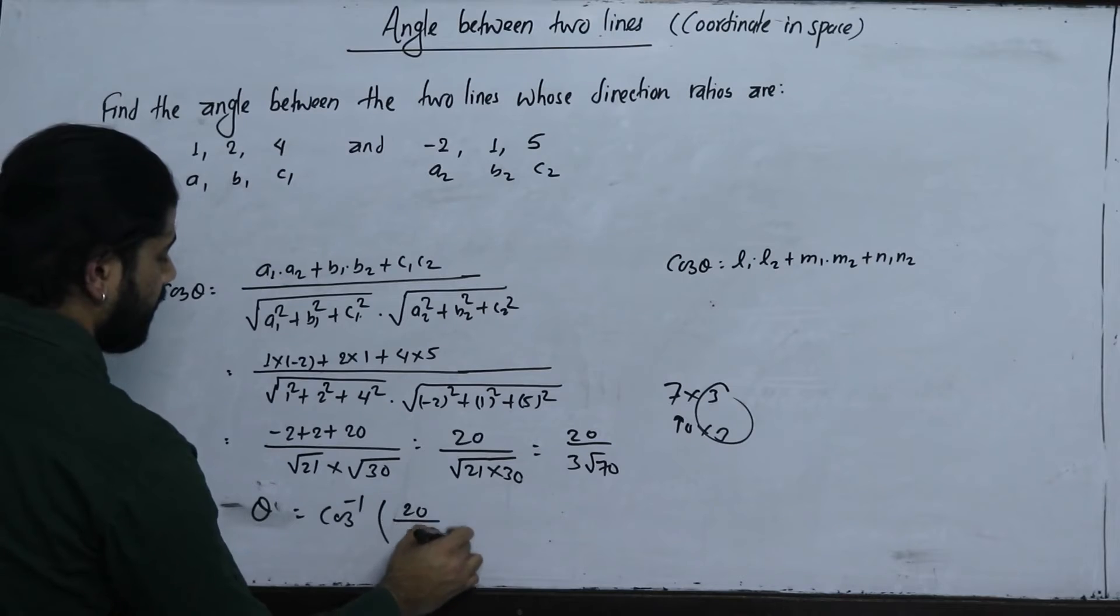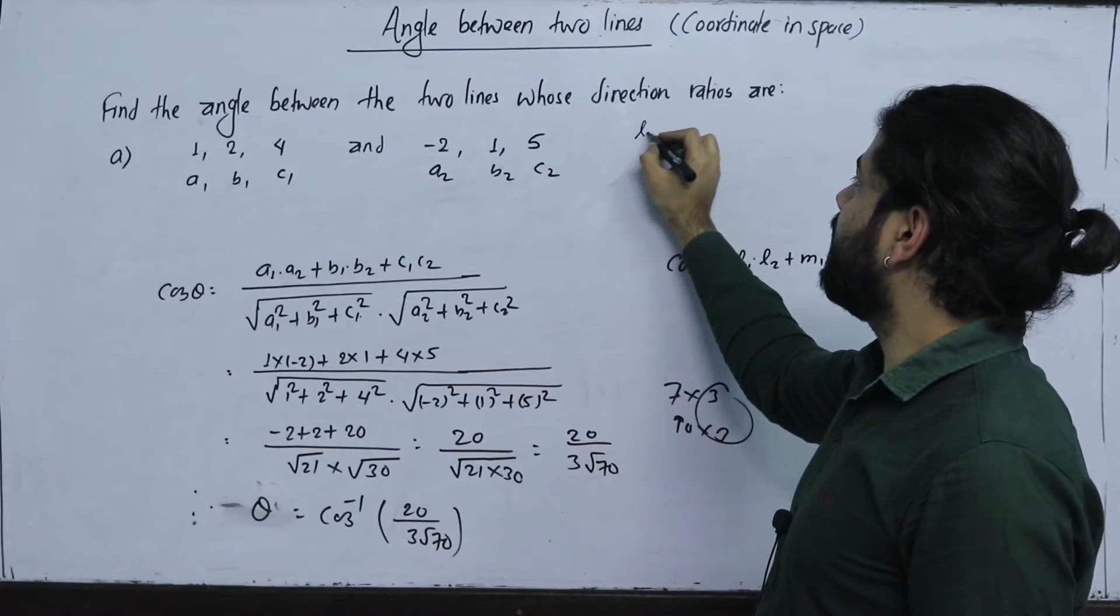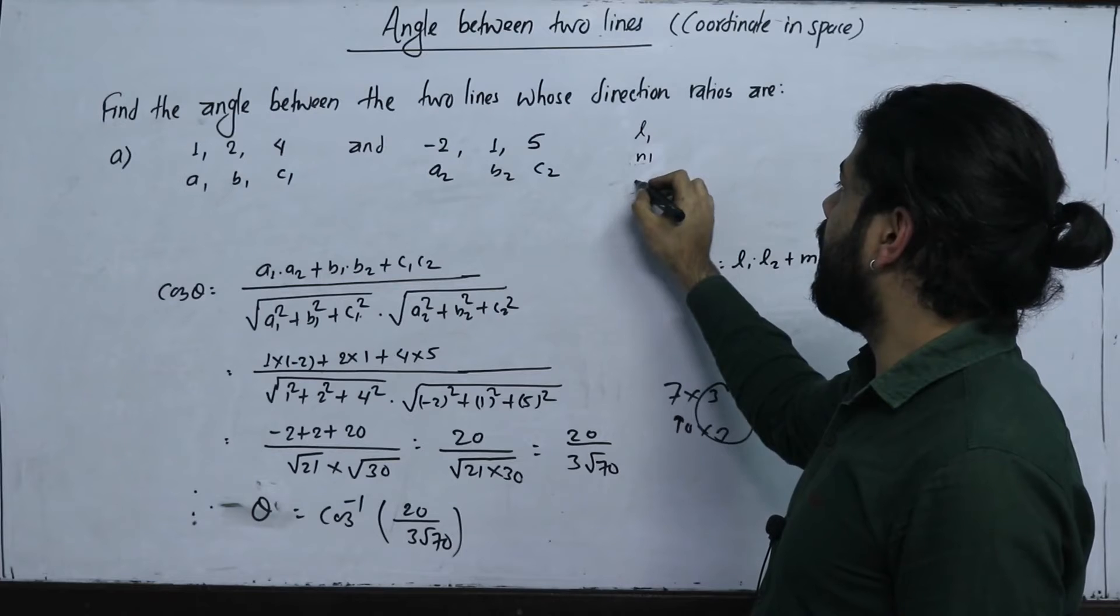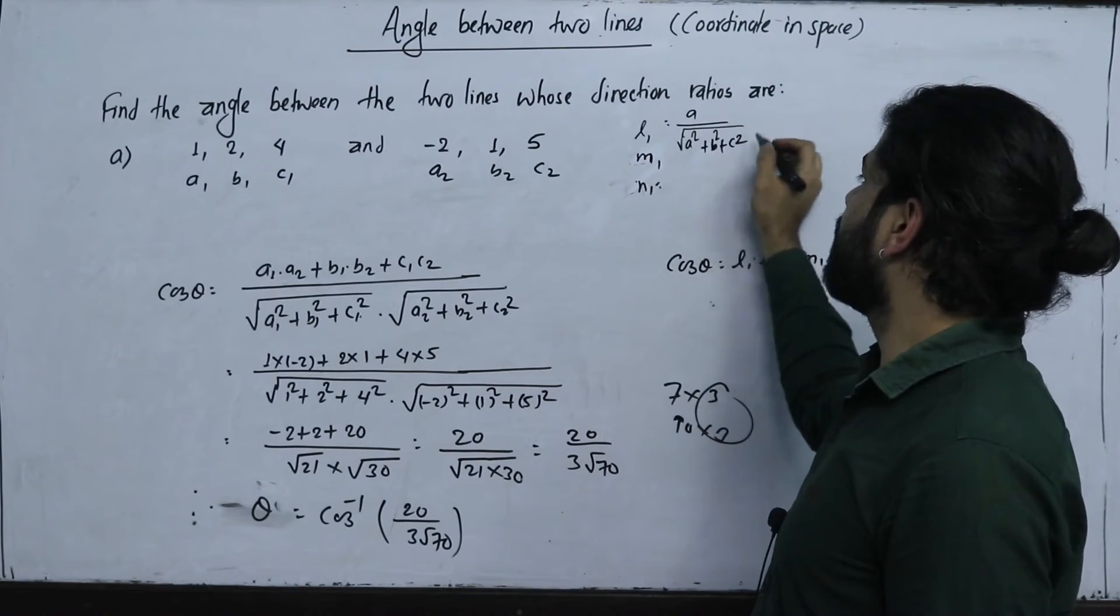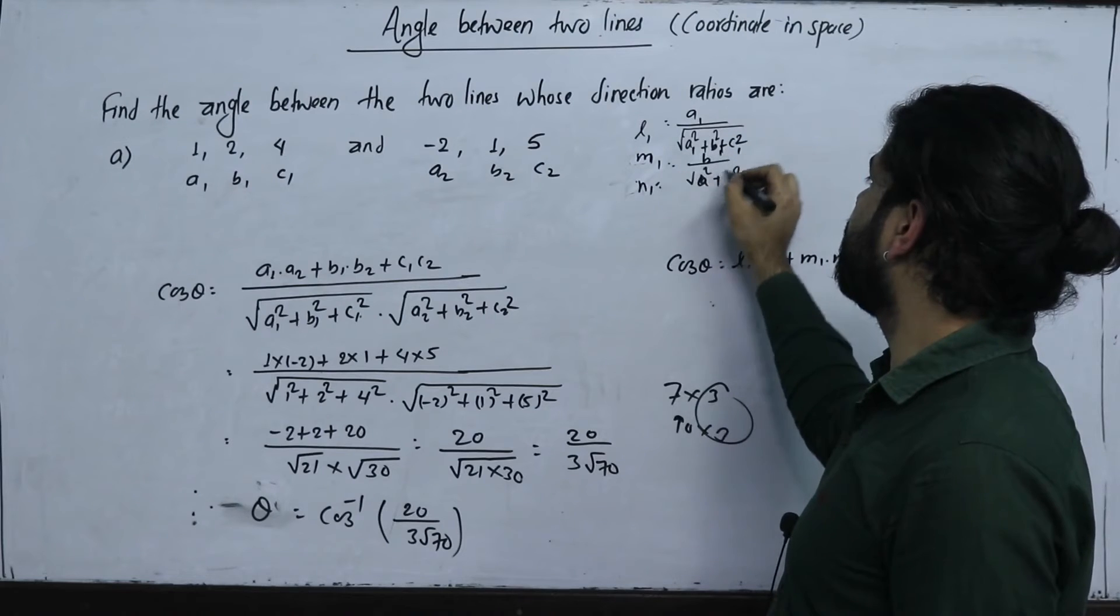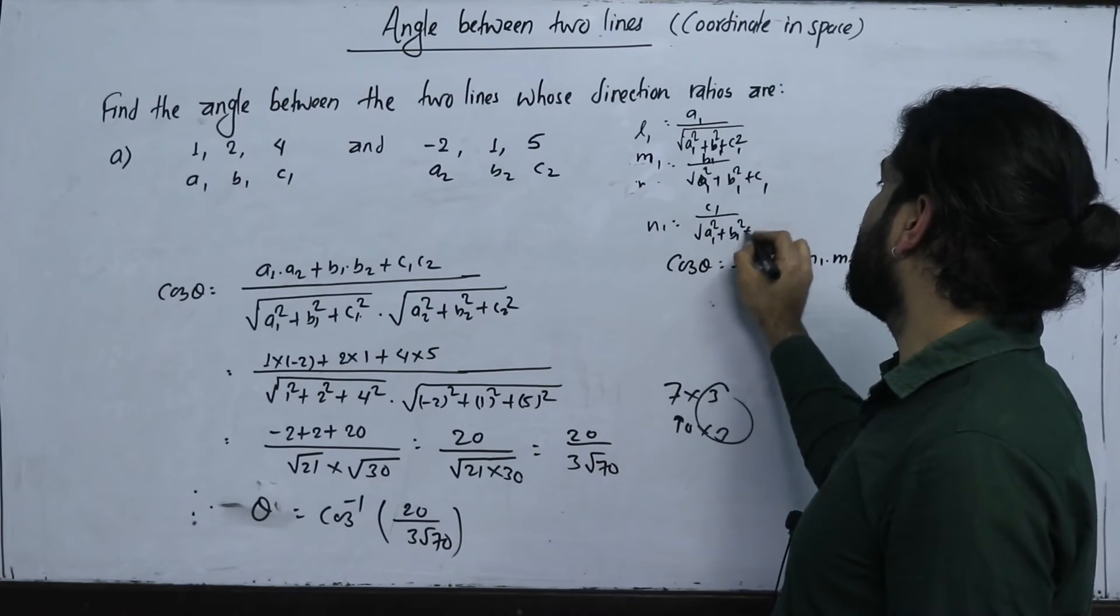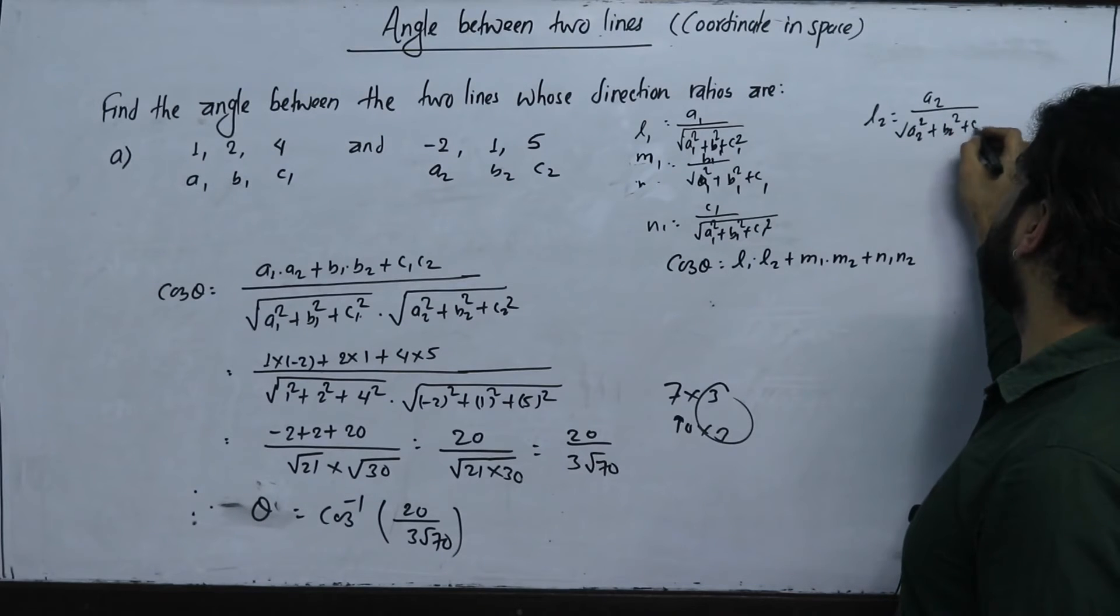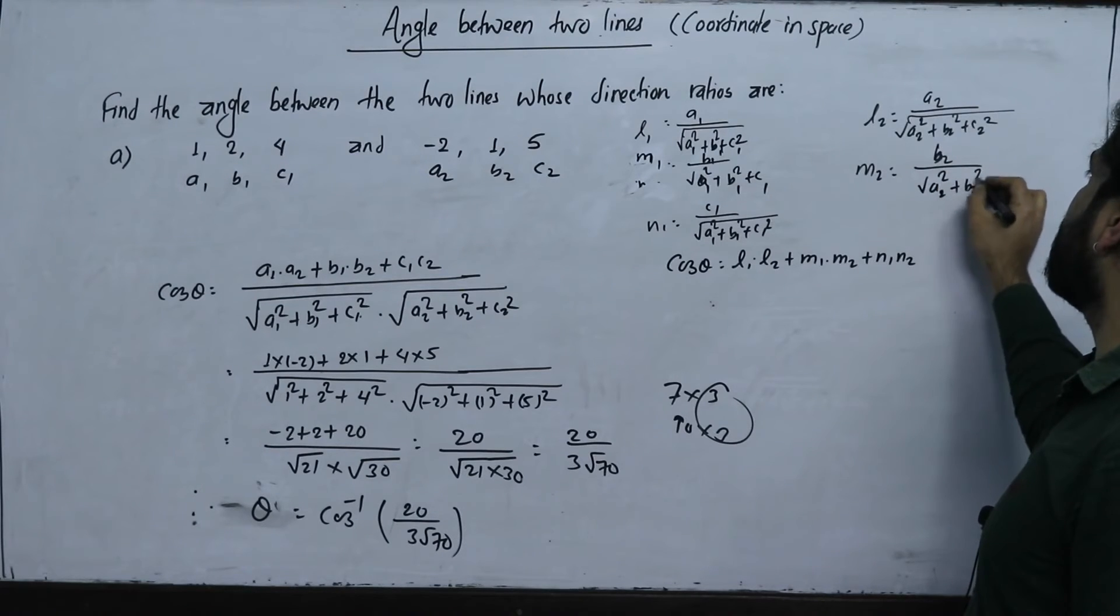This is the direction ratio formula. For direction cosines, L1 equals a1 over square root of a1 square plus b1 square plus c1 square. M1 equals b1 over square root of a1 square plus b1 square plus c1 square. N1 equals c1 over square root of a1 square plus b1 square plus c1 square. And L2 equals a2 over square root of a2 square plus b2 square plus c2 square. M2 equals b2 over square root of a2 square plus b2 square plus c2 square. N2 equals c2 over square root of a2 square plus b2 square plus c2 square.